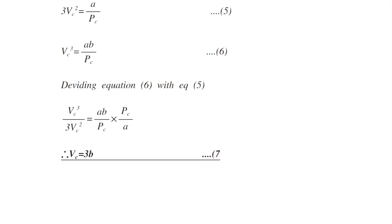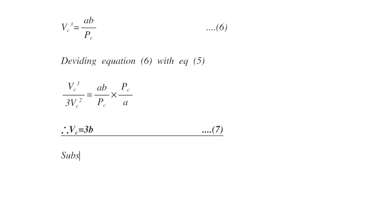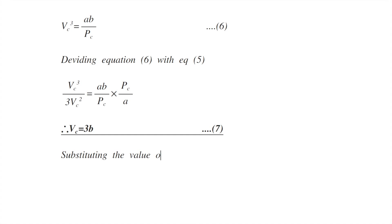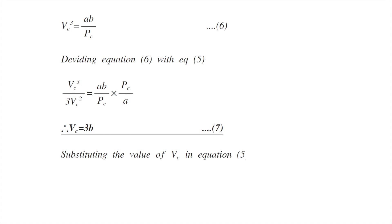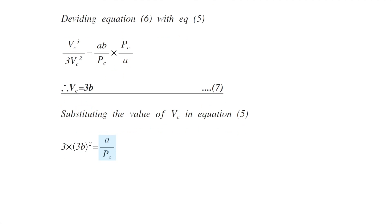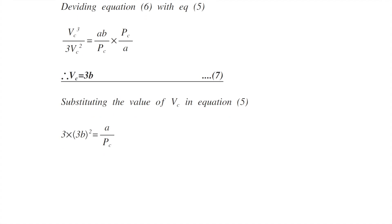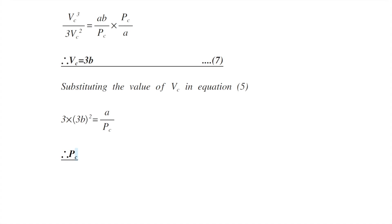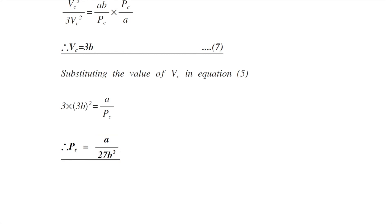Substituting the value of Vc into equation 5, we get 3(3b)² = a/Pc, so 27b² = a/Pc. Therefore Pc = a/27b². This is the formula for critical pressure, equation 8.